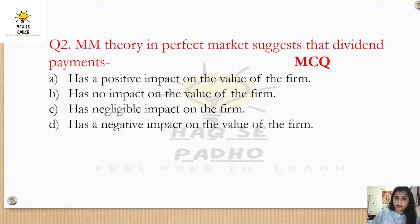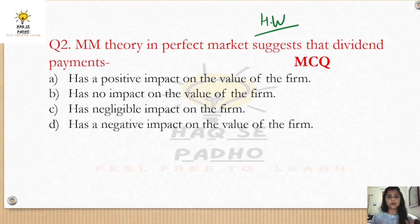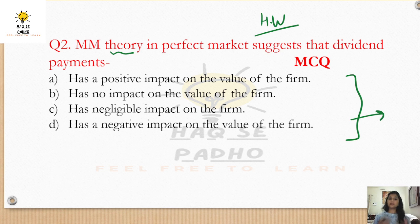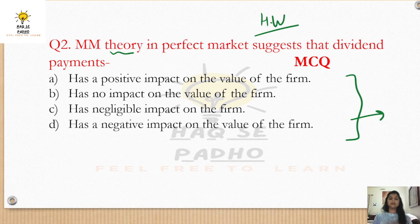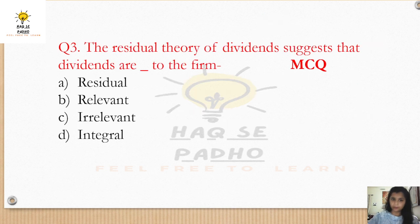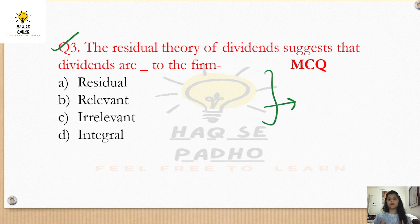If you haven't covered the previous theories, I will share the links in this video. Now, one practice question: according to M-M theory, will dividends impact the value of the firm? M-M theory is an irrelevant theory — so dividends do not impact the value of the firm. Next question: the residual theory of dividend suggests that dividends are paid from residual profit — so how is dividend related to the value of the firm? The answer is: irrelevant.